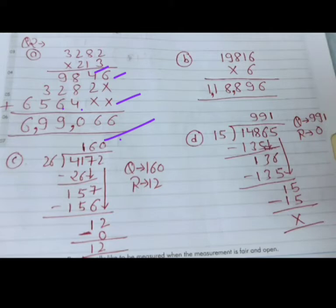B part, directly multiply karenge, humare paas aagaya 118,896.